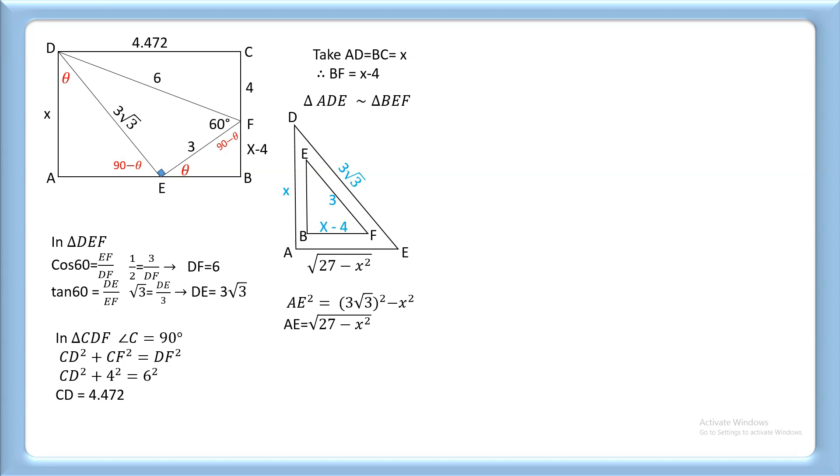Now using the property of similar triangles, we can write DE/EF = AE/BF. Putting in the values: 3√3/3 = √(27 - x²)/(x - 4). Simplifying, we get √3 = √(27 - x²)/(x - 4).